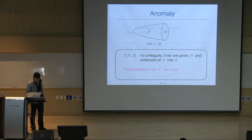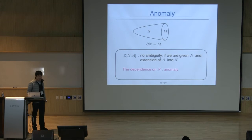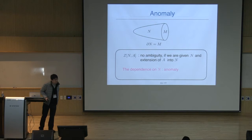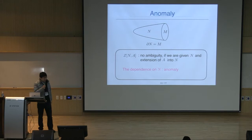A question was raised about working in Euclidean signature. I work in Euclidean signature, and in that case there is no restriction on the sigma — we can consider higher genus surfaces and so on. In Lorenzian signature, one would typically restrict to space-like slices, but since I always work in Euclidean space, that restriction is not needed.